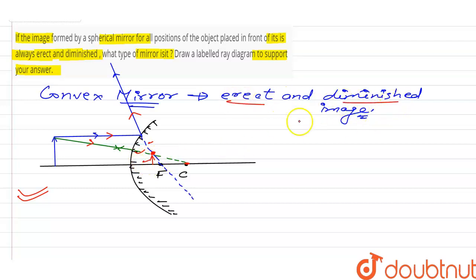Diminished means smaller than object, or we can say the size of image is less than size of object, or height of image is less than height of object. This is called a diminished image.